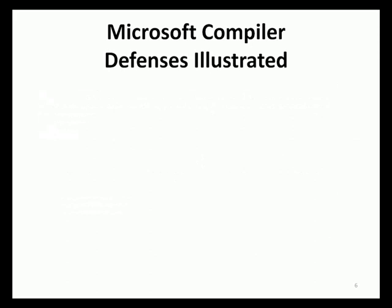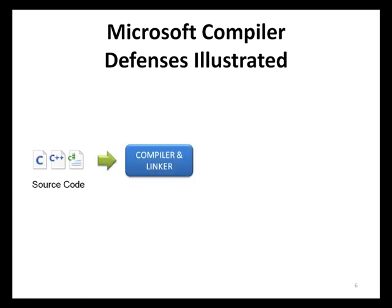This slide provides an illustration of the runtime defenses applied to applications using Microsoft compilers. Whenever an application is implemented, it is first implemented as source code using a programming language such as C, C++, or C#. That source code is then inputted into a compiler which compiles the code into binary objects. A linker then takes and transforms the binary objects into a binary file, such as a library or executable.